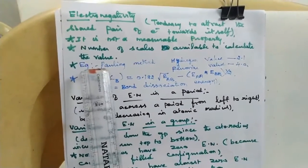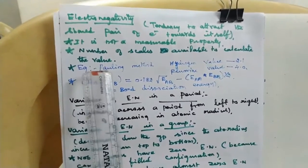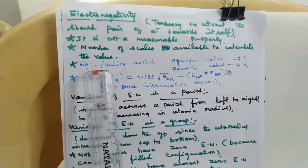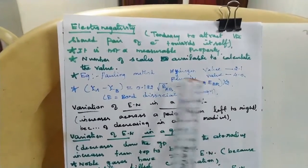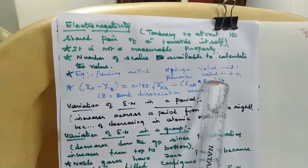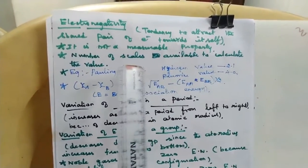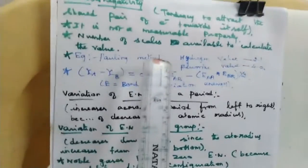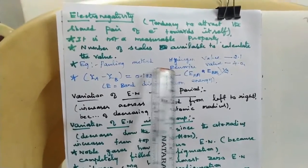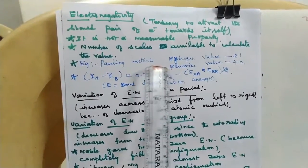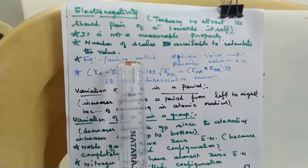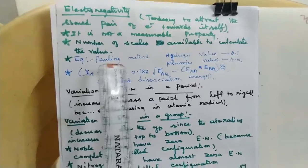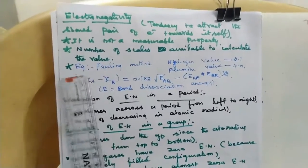The Mulliken Scale is used to calculate the electronegativity of each element. For example, using Pauling's method, the electronegativity of Hydrogen is 2.1 and Fluorine is 4. These are experimentally determined values. Electronegativity has no unit — it is not expressed in terms of electron volts or kilojoules.